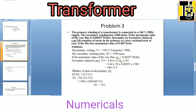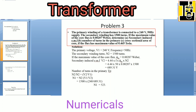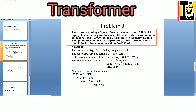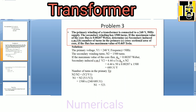Let us go through problem number three on single phase transformer. The statement is: the primary winding of a transformer is connected to a 240 volt, 50 hertz supply. The secondary winding has 1500 turns. If the maximum value of the core flux is 0.00207 Weber, determine: first, secondary induced EMF; second, number of turns in the primary; third, cross sectional area of the core if the flux density has maximum value of 0.465 tesla.